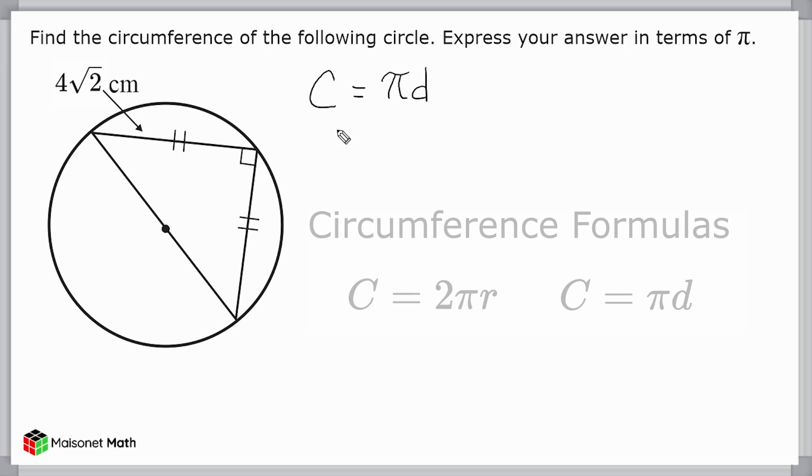So what we're going to do is notice that our diameter is the same thing as the hypotenuse of this right triangle, but we should also notice that we have an isosceles triangle because we have two marks here and two marks here. That indicates those sides are equal in length, and it is given that this side has a distance of 4√2 centimeters, which means this is going to be equal in length to this value right here.